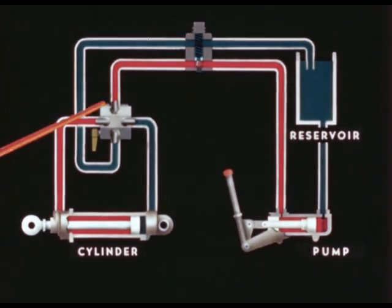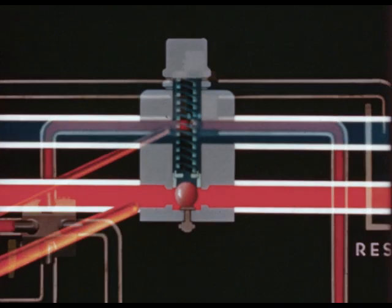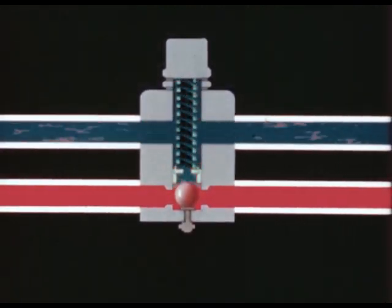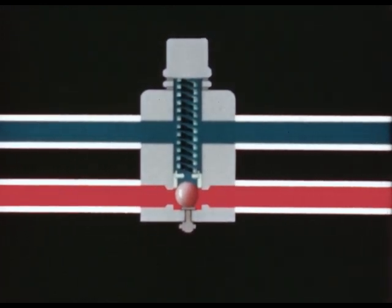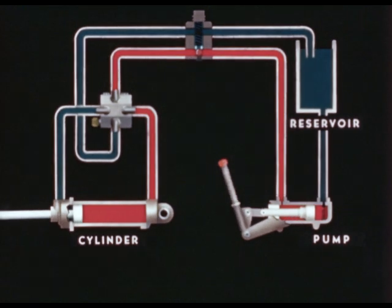A relief valve, usually of the spring-loaded type, is installed between the pressure line from the pump and the return line to the reservoir to permit continuous operation of the pump. This valve permits the return of the fluid to the reservoir.